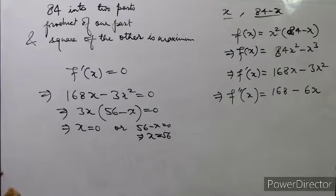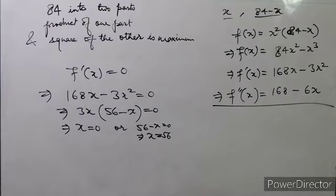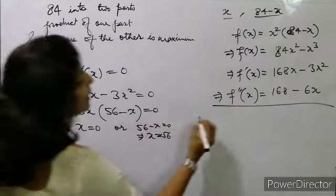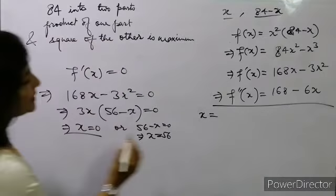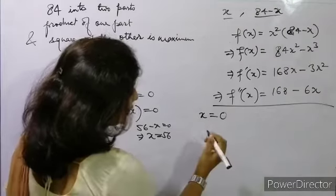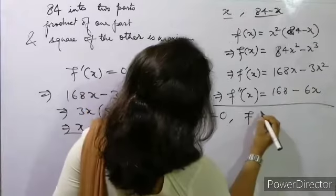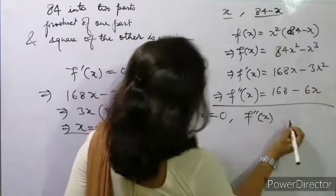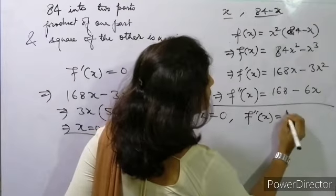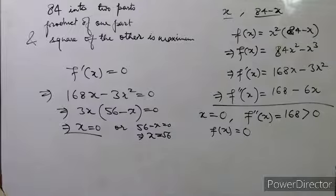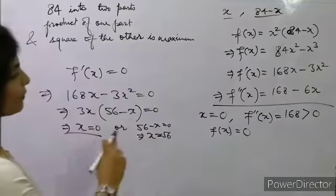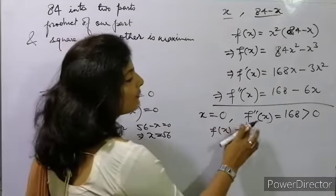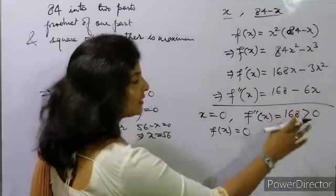For x = 0: f''(0) = 168 - 6×0 = 168, which is greater than 0, so x = 0 is a minimum. Also f(0) = 0, which is the minimum value.